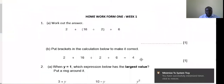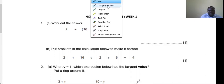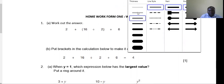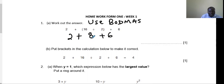Question number one: work out the answer for 2 plus 16 divided by 2 plus 6. What we basically do here is to use BODMAS. That means we start with brackets — 16 divided by 2 is 8. So add 2: 2 plus 8 is 10. Then 10 plus 6 is 16. So the answer here is 16.